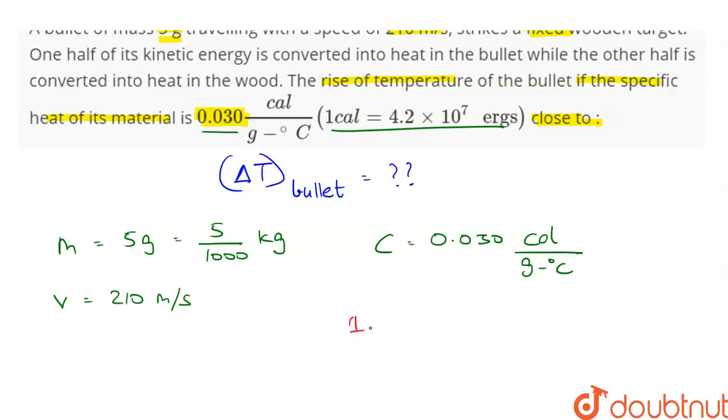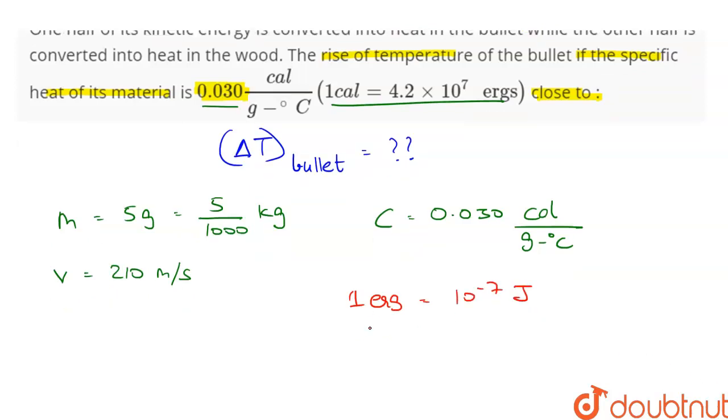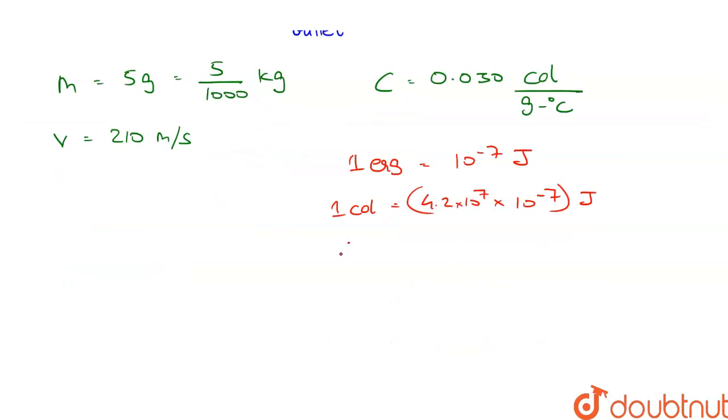So one erg on the other hand is equal to 10 to the power minus 7 joules. Therefore one calorie which is equal to 4.2 into 10 to the power 7 erg is equal to 4.2 into 10 to the power 7 into 10 to the power minus 7 joules.